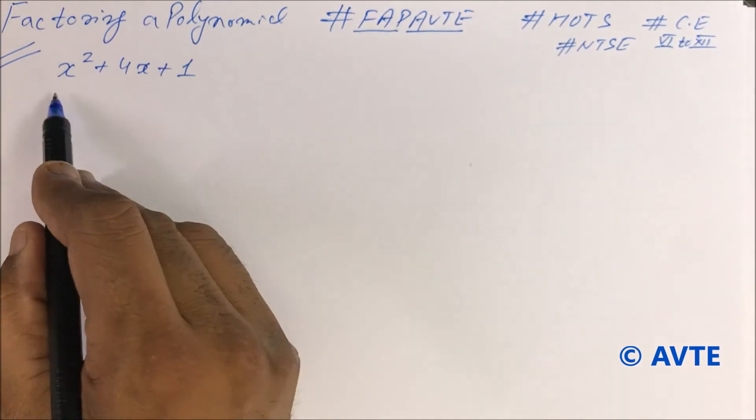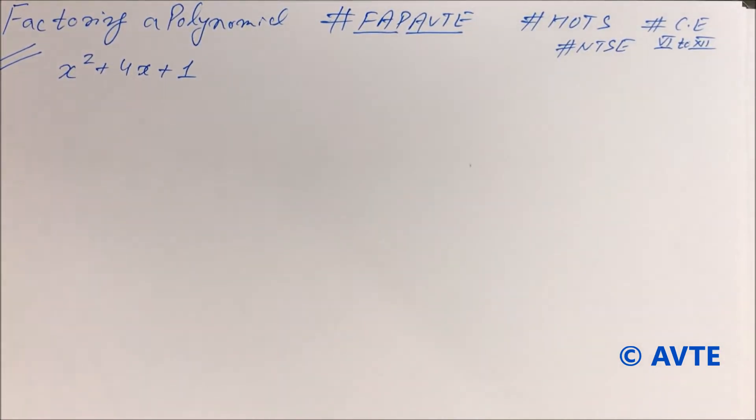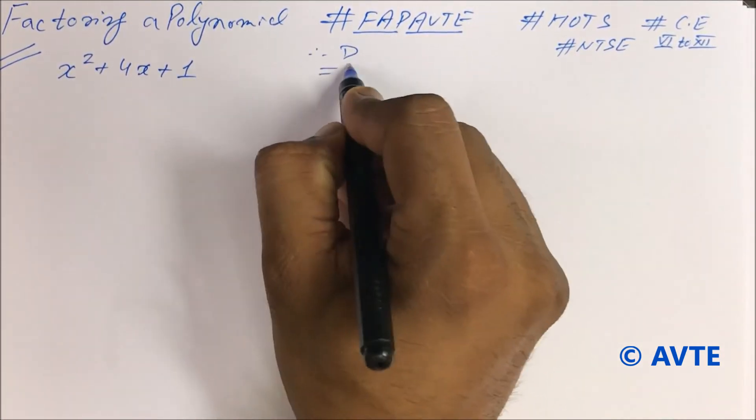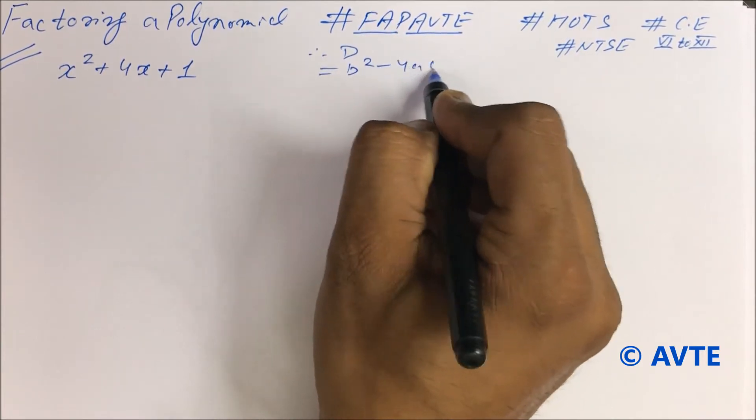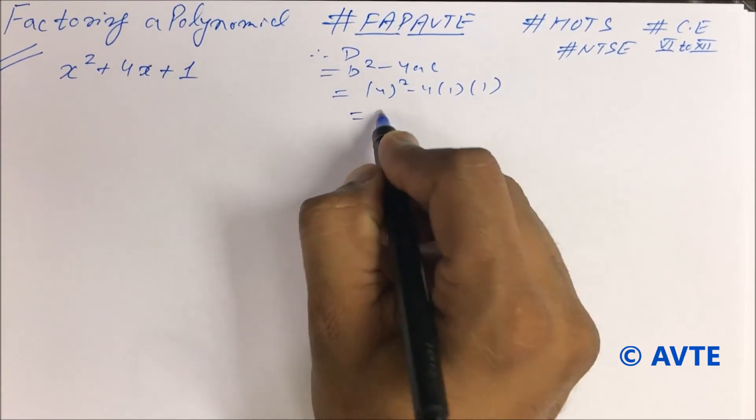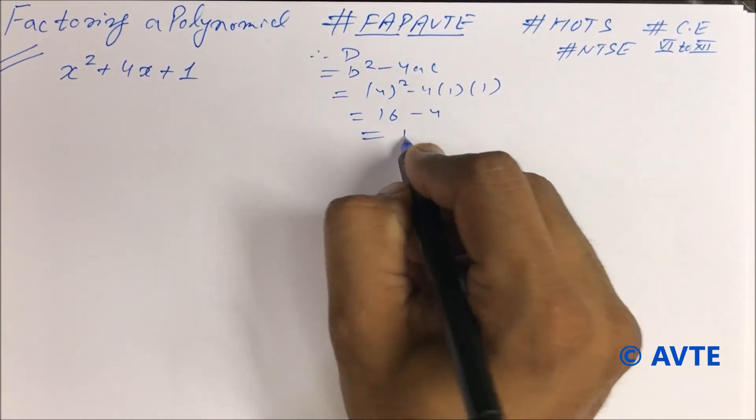So here we have a question x square plus 4x plus 1. It seems to be a very basic question, but if you find the discriminant D, b square minus 4ac, it is 4 square minus 4 into 1 into 1, that is 16 minus 4, that is 12.